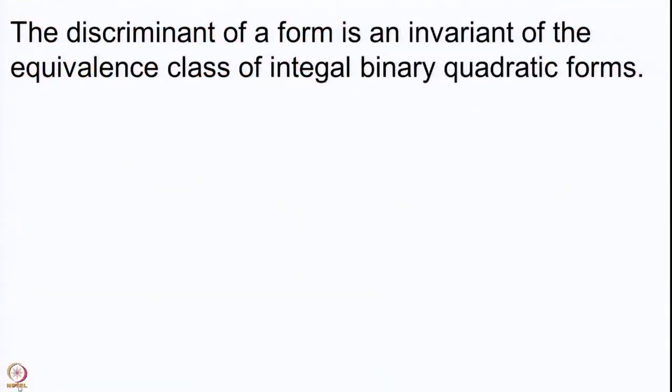Welcome back. We have defined the discriminant of an integral binary quadratic form and studied it at some length in our last lecture. The most important thing about the discriminant is that it does not change when we apply transformations to binary quadratic forms. The discriminant is an invariant of the whole equivalence class of integral binary quadratic forms.